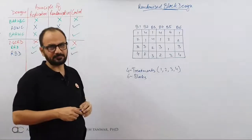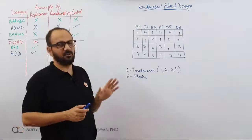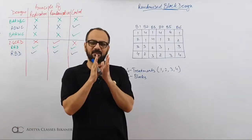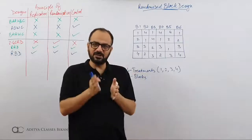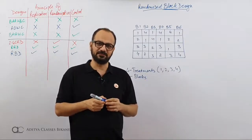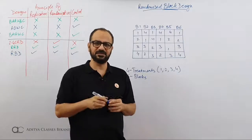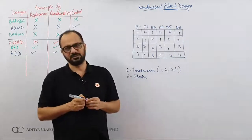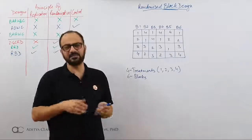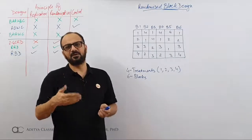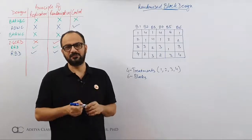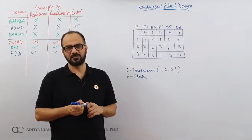So this is our randomized block design — a very simple design. Just remember: blocks are groups within which the extraneous factor can be assumed to be homogeneous. The impact of the extraneous factor can be assumed to be homogeneous within that group. Next time we will talk about Latin square. Thanks for watching, bye-bye.